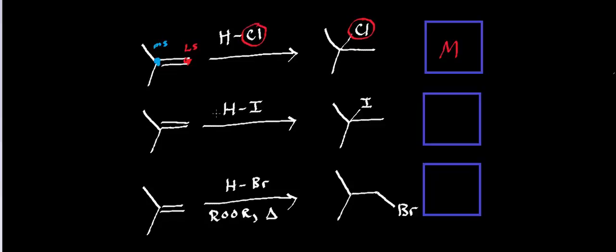Now there's actually another type of hydrohalogenation, except we're going to use hydroiodic acid instead of hydrochloric acid. And again, for HI, this group — the iodine — adds to the more substituted side of the double bond. Therefore, this is also a Markovnikov addition.